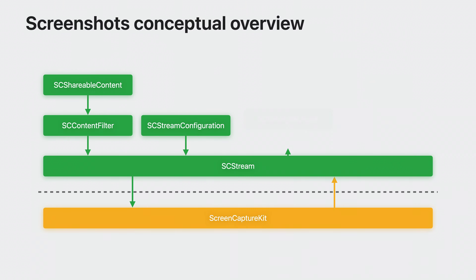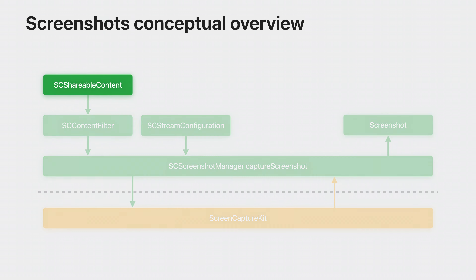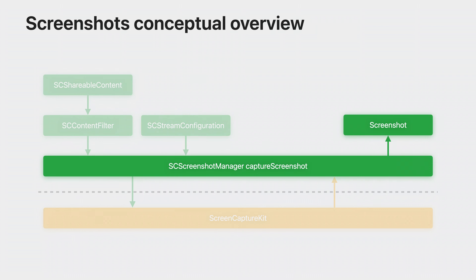Taking a screenshot follows a similar flow to Screen Capture Kit streaming, but in place of creating an SCStream, you'll call the screenshot API. To start, just like for creating a stream, use SCShareableContent to get your desired content and create your SCContentFilter. Don't forget to set up your SCStreamConfiguration with all the options you want for your screenshot. Once you have the content filter and stream configuration, call the screenshot API and pass them in. The API is a class method on the SCScreenshotManager class, so you won't need to create an SCScreenshotManager object. When the screenshot image is ready, it'll be returned to you asynchronously in whichever format you chose.